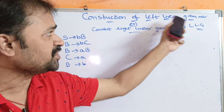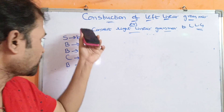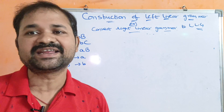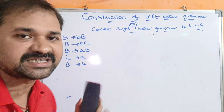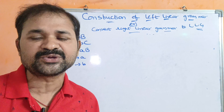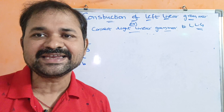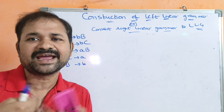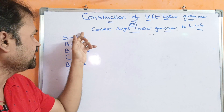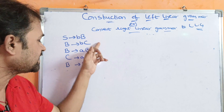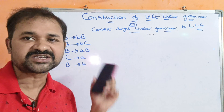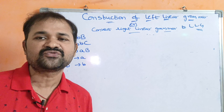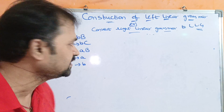Let us discuss here about construction of left linear grammar from the right linear grammar, or converting right linear grammar to the left linear grammar. Here a right linear grammar is given, and we have to convert it into the left linear grammar. In right linear grammar, in each production, if there is a non-terminal, that non-terminal should be the rightmost symbol. For example, in S implies BB, B is the rightmost non-terminal. Now we have to convert this grammar into the left linear grammar by following 4 steps.